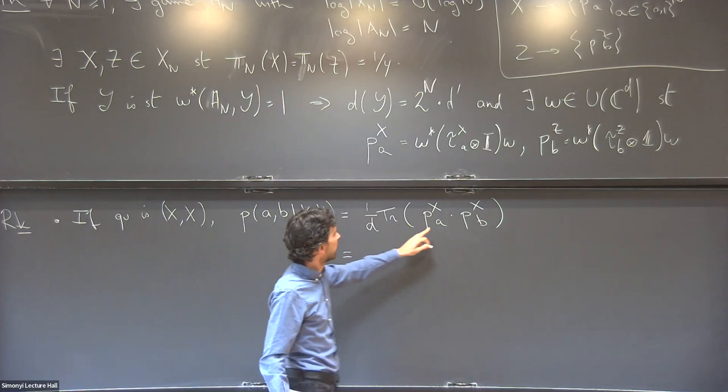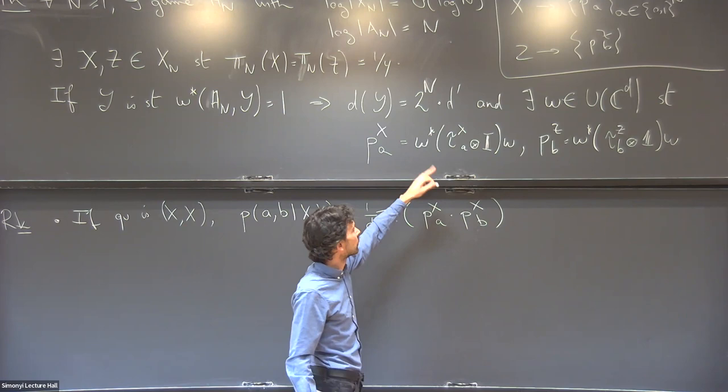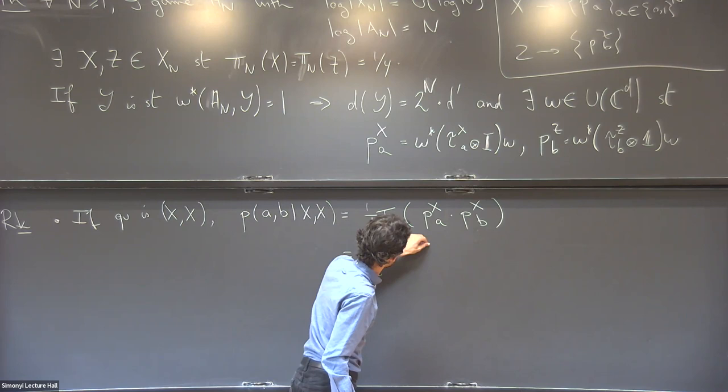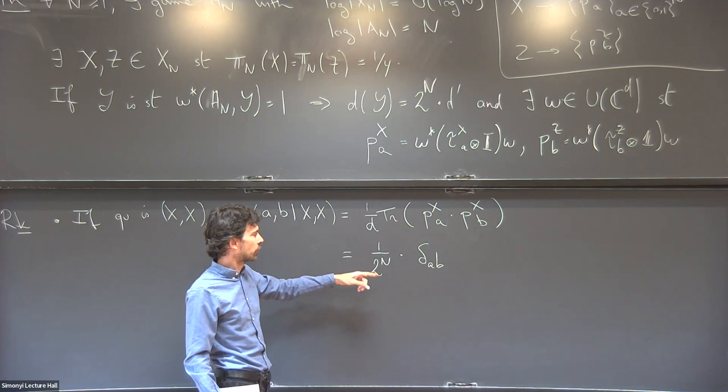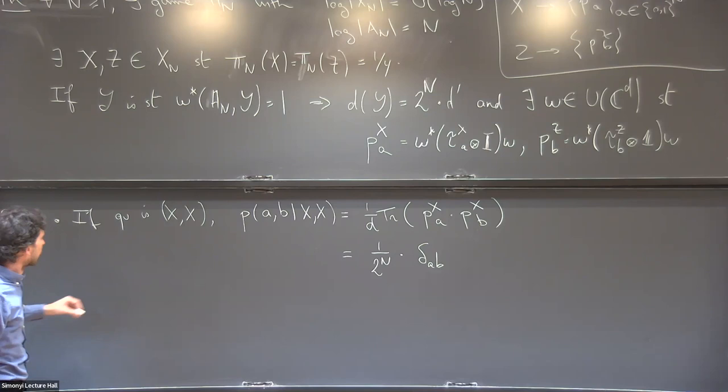If A is different from B, these projections are orthogonal so we get zero. Since all operators have the same rank, we get one over 2^N times the Kronecker delta of A and B. So if the strategy has this structure, when both players are asked question X, they must return the same answer A = B. Moreover, whatever answer they choose, it must be uniformly distributed over all N-bit strings.